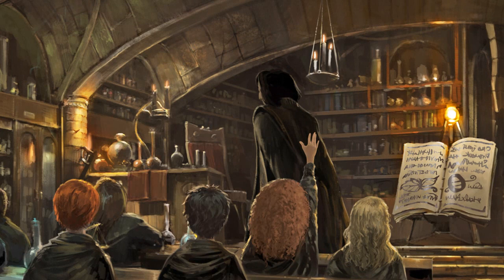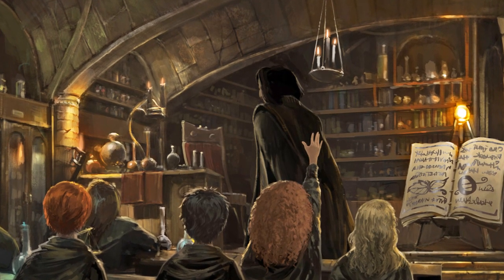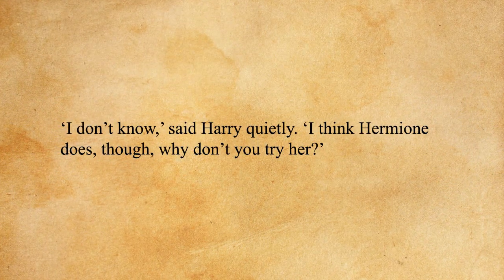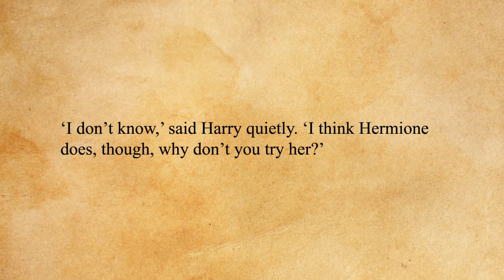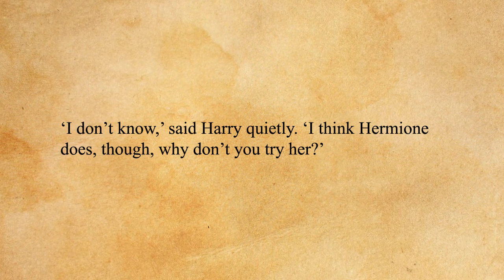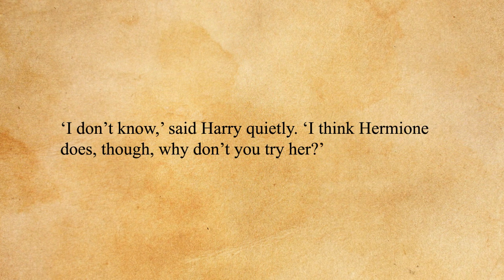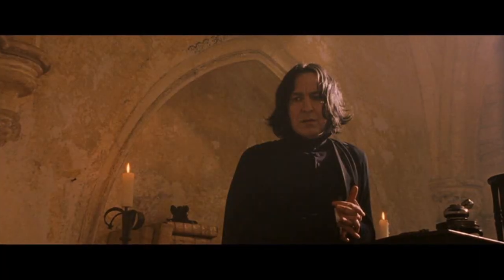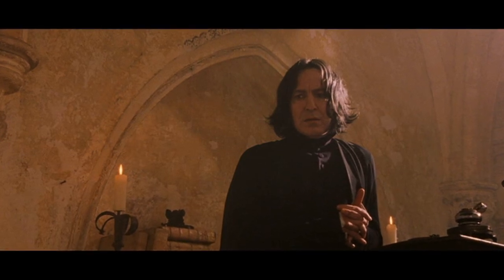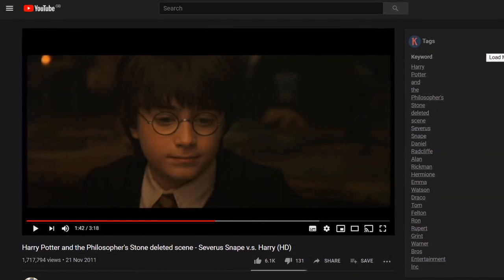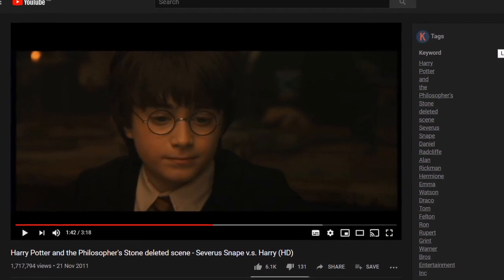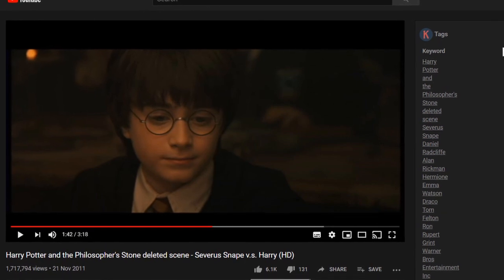This can be seen clearly if we compare Harry's first ever potions lesson in the book versus the movie. When Snape starts to question Harry in the book, he responds by saying he doesn't know the answer and that maybe Snape should try asking Hermione instead because she has her hand up — in other words, he's cheekier and more rebellious. In the film, Harry just sits and takes Snape's abuse. Those of you who've seen the deleted scenes will know they did actually film some dialogue where Harry suggests Snape ask Hermione instead, but unfortunately this didn't make the final cut.